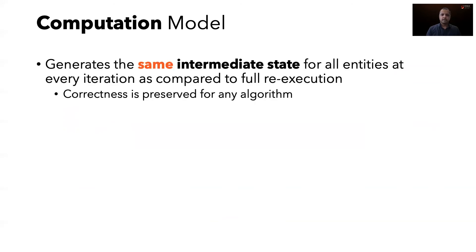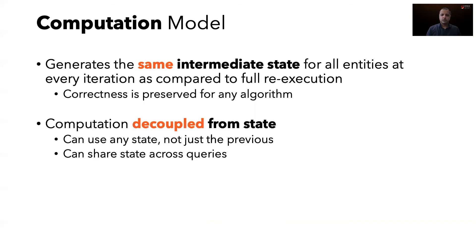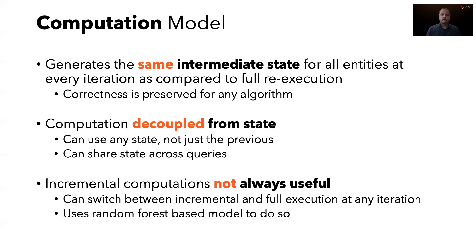The graph computation model has many unique properties. Since the intermediate state generated is the same as complete re-execution, any algorithm implemented in a graph parallel fashion can be made incremental. Further, due to decoupling of state from computation, it is possible not only to share state across queries, but also to use any state to do incremental computation. Finally, incremental computation may not be useful when modifications to the graph are large. Tegra's computation model can switch between incremental and full execution at any iteration, and to do so, it uses a simple random forest based machine learning model. More details on all these aspects can be found in our paper.